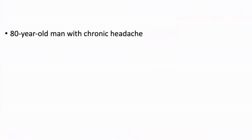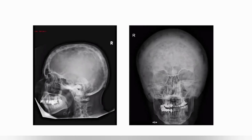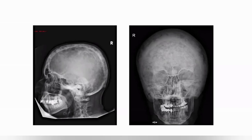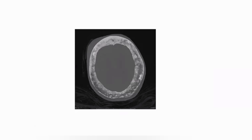80-year-old man with chronic headache. On X-ray skull frontal and lateral projections, there is marked bony expansion of the entire skull with cortical thickening. There are mixed lytic and sclerotic regions noted throughout the skull, along with thickening and coarsening of the trabecular pattern. The base of the skull is slightly spared. No discrete lytic or sclerotic lesions besides the diffuse appearance, giving a cotton wool appearance of the entire skull. Visualized cervical vertebrae appear unremarkable. Mandible is normal.